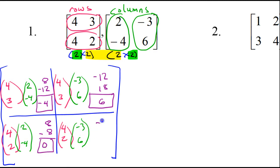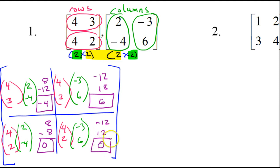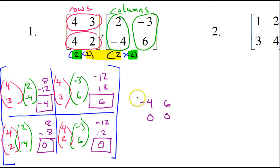Multiply here, I'm going to get negative 12; multiply here, I'm going to get positive 12. Add them up, I'm going to get 0. This gives us the product matrix: negative 4, 6, 0, 0.